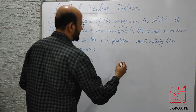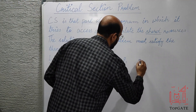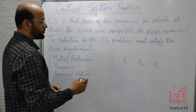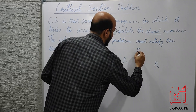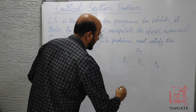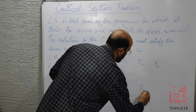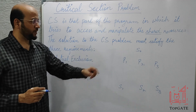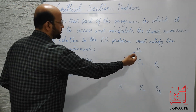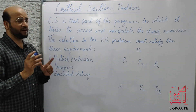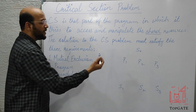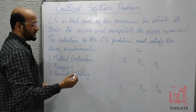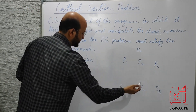Suppose there are three processes: P1, P2, and P3. Apart from these processes, we have certain resources — S0, S1, S2, and S3. S0 is a shared resource, meaning P1, P2, and P3 can all use it. S1, S2, and S3 are private resources — S1 belongs to P1, S2 belongs to P2, and S3 belongs to P3.